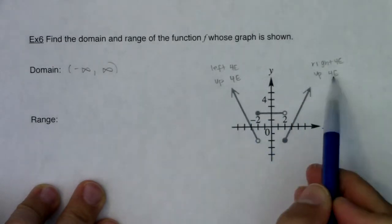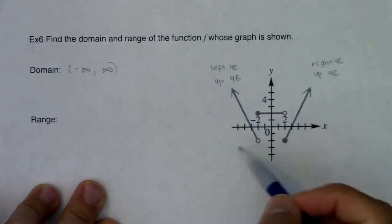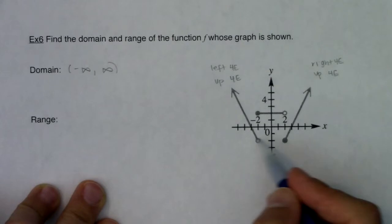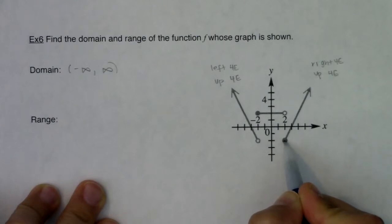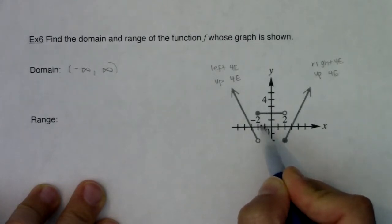Alright, so for my range, I see I have an up forever, and I don't have a down forever, so I need to take a look at my lowest point. And these tie for my lowest points, but this one, since it's closed, is actually my lowest point. Because over here, it's open at, it looks like it's about 2, negative 2.